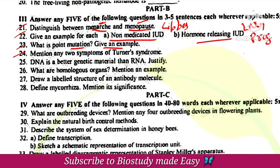Very important question: the symptoms of Turner's syndrome include females being sterile with a rudimentary ovary. DNA is better genetic material because it is double-stranded. These are important questions with answers in the molecular basis of inheritance.